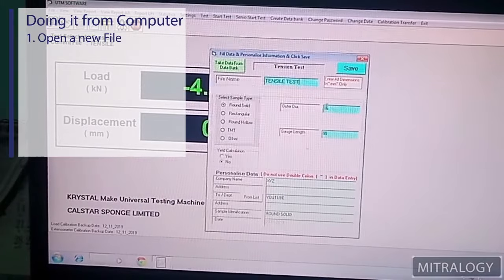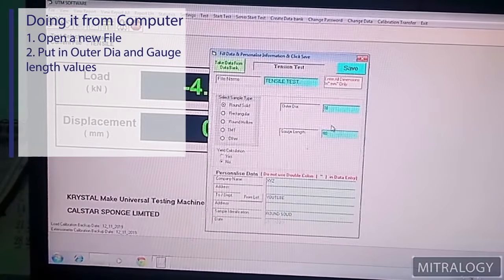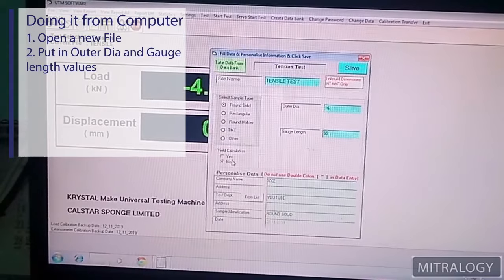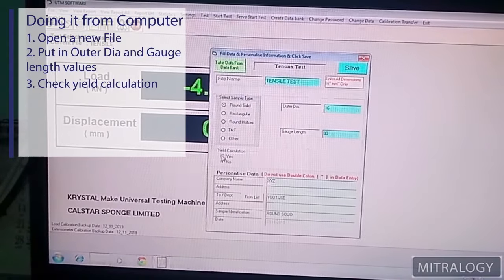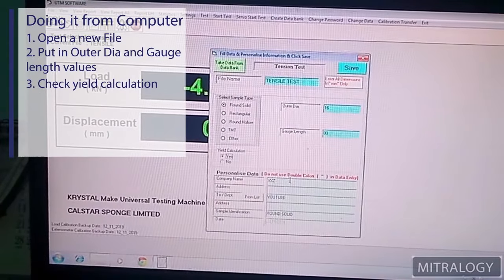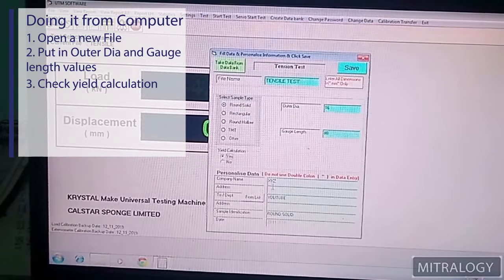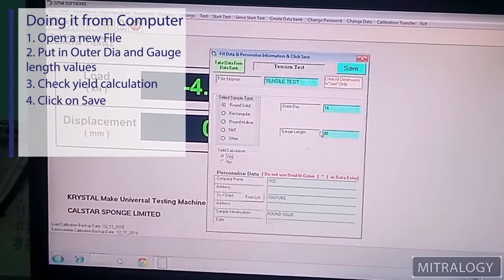Our sample outer diameter is 16, so this is okay. Gauge length is also 80. We will do the yield calculation, so we will keep it in yes. Company name XYZ and everything is okay now. I am saving it.